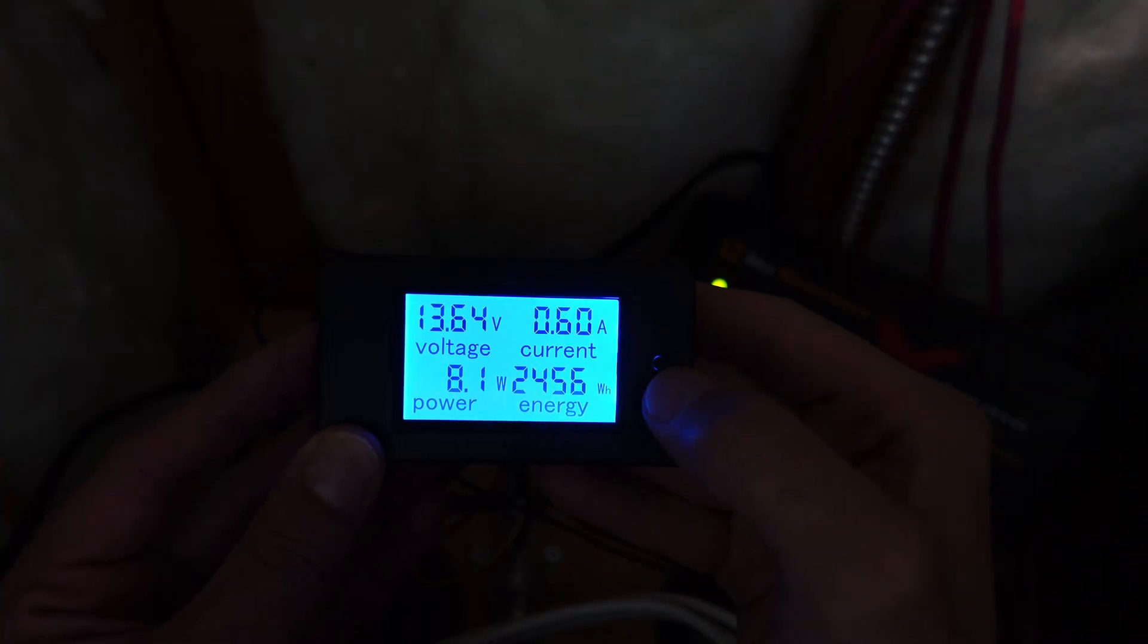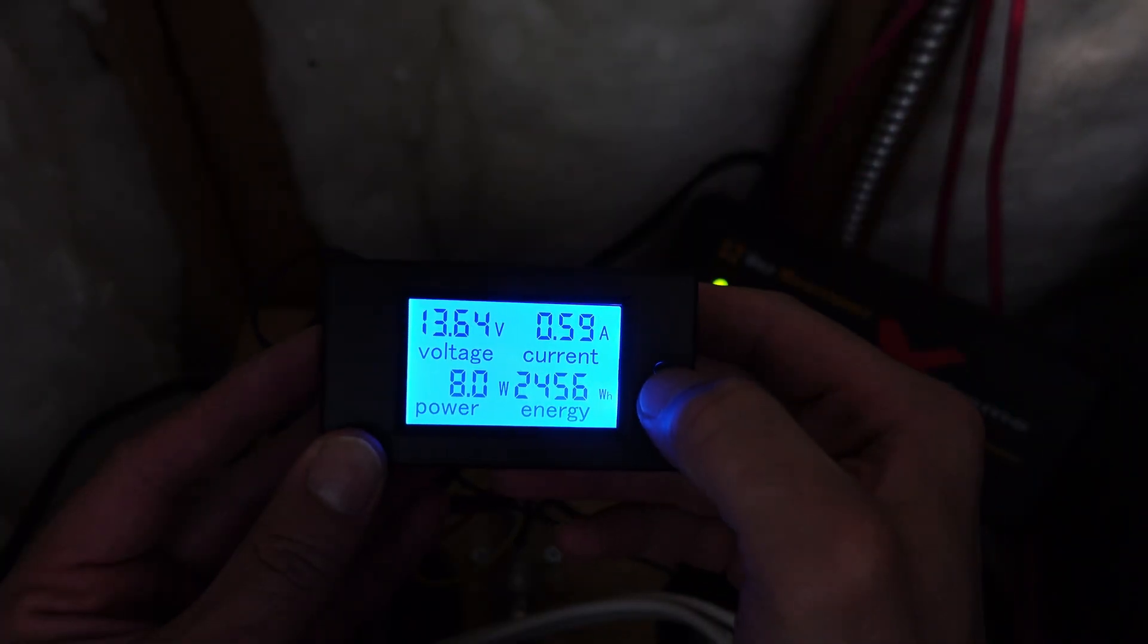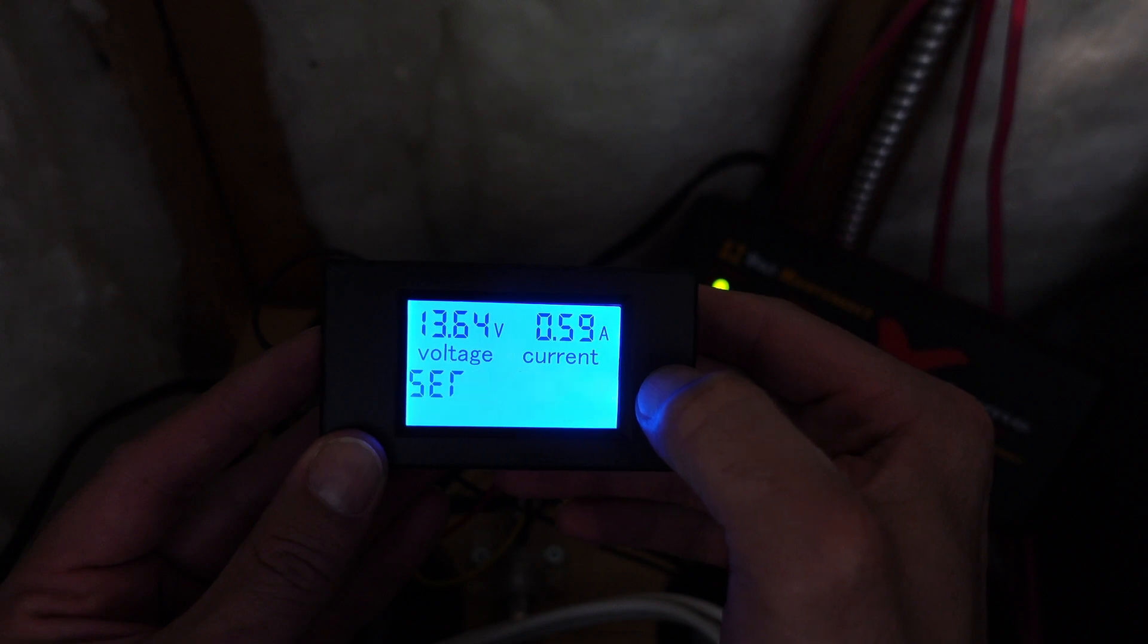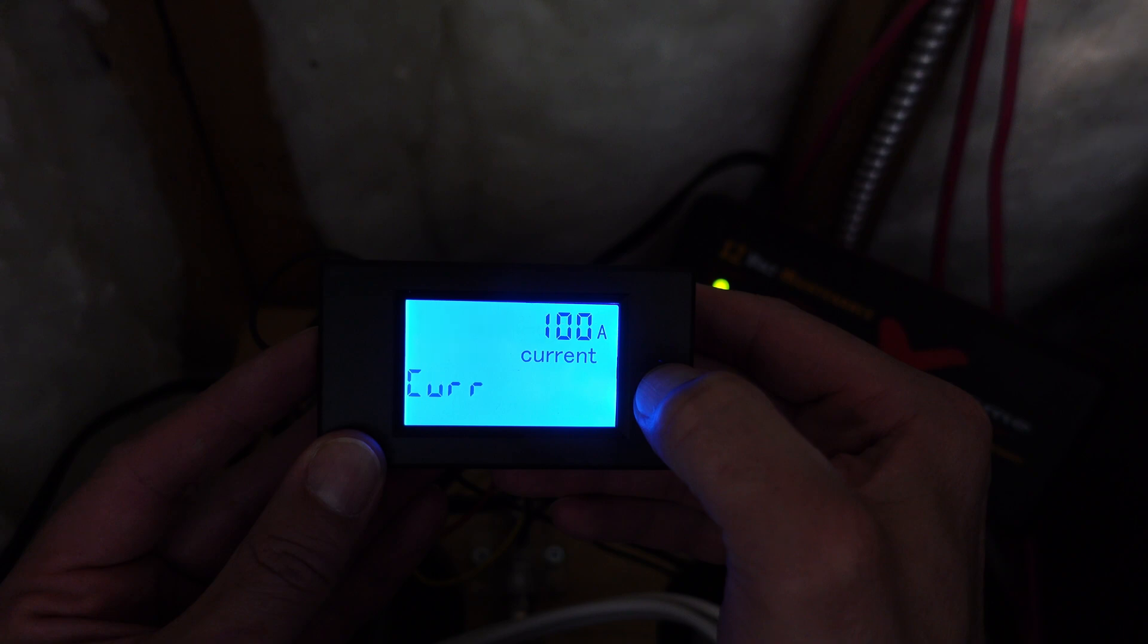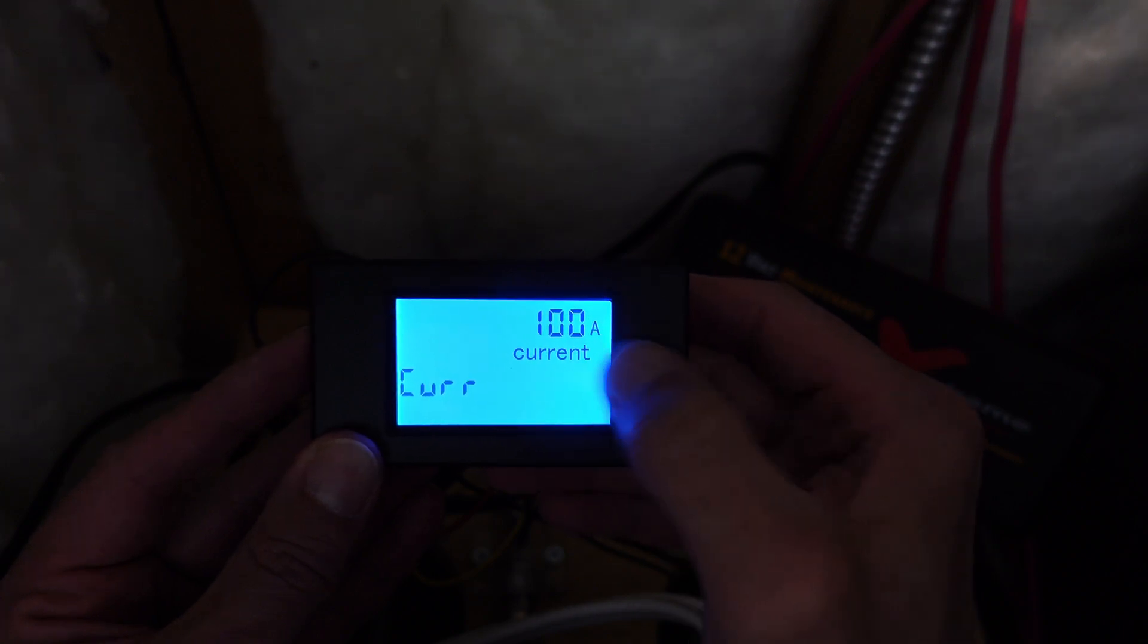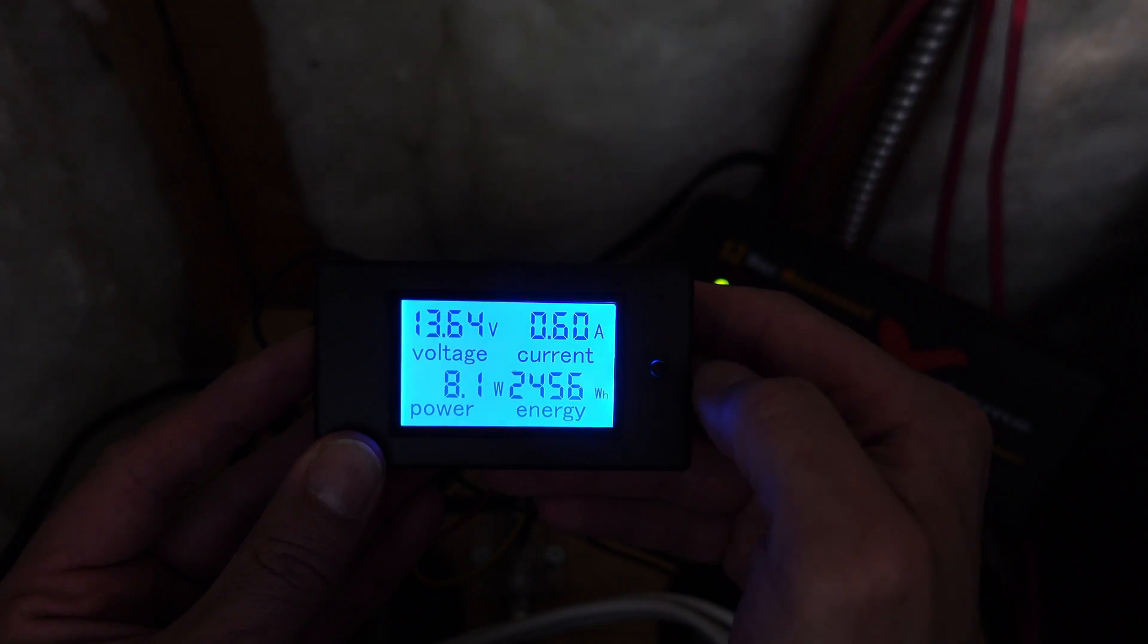Now I forgot to do this part at the start of the video. Before you use this thing for the first time make sure you push and hold until you see Kerr and that'll let you set up the shunt. And in our case it is a 100 amp shunt so we are already good. So the default is just fine.